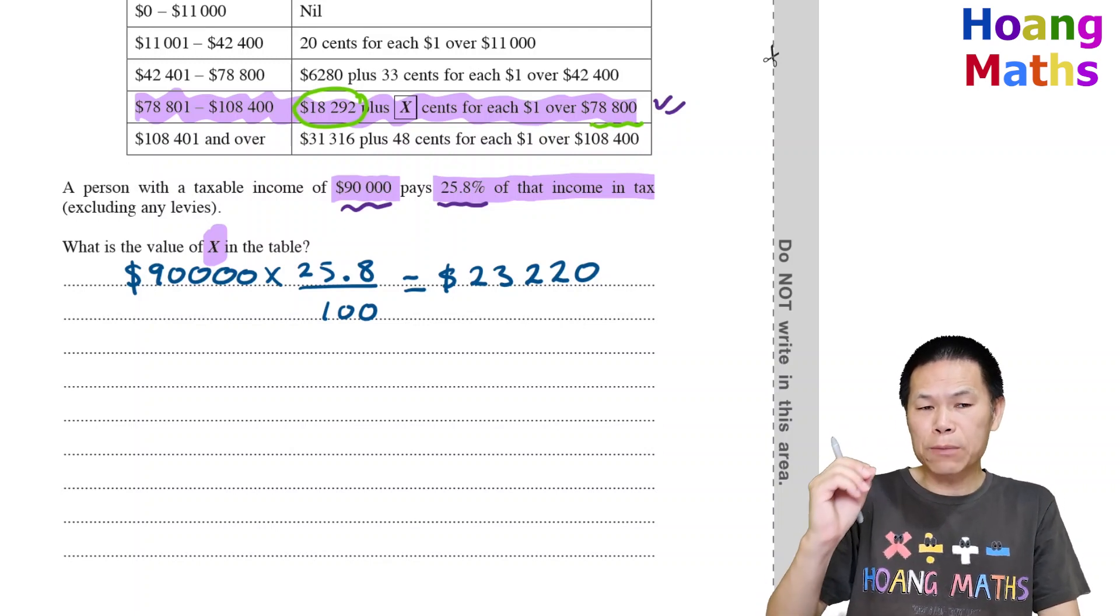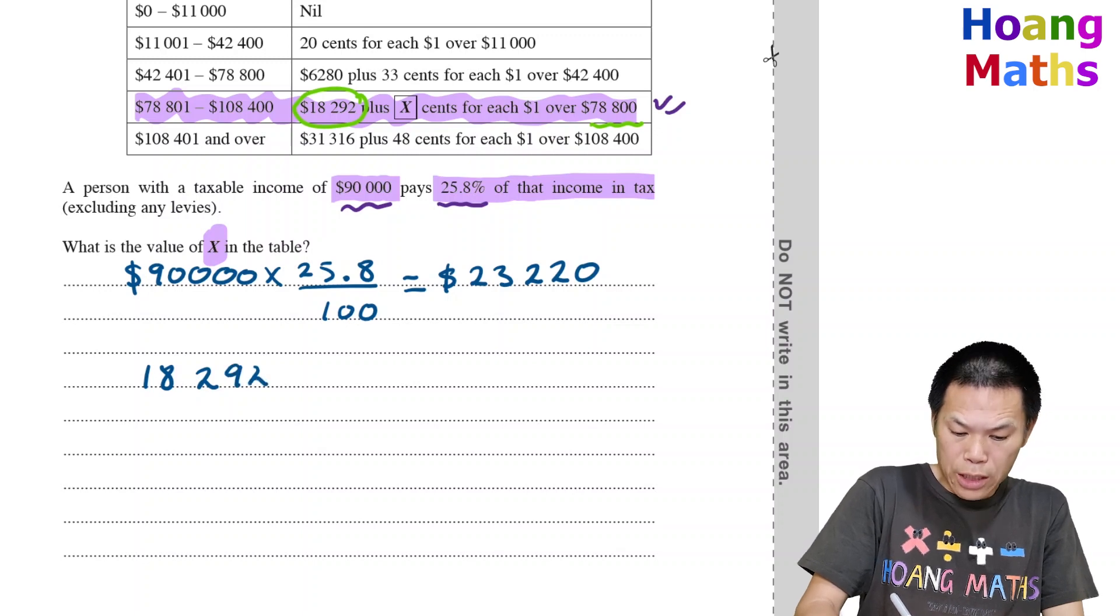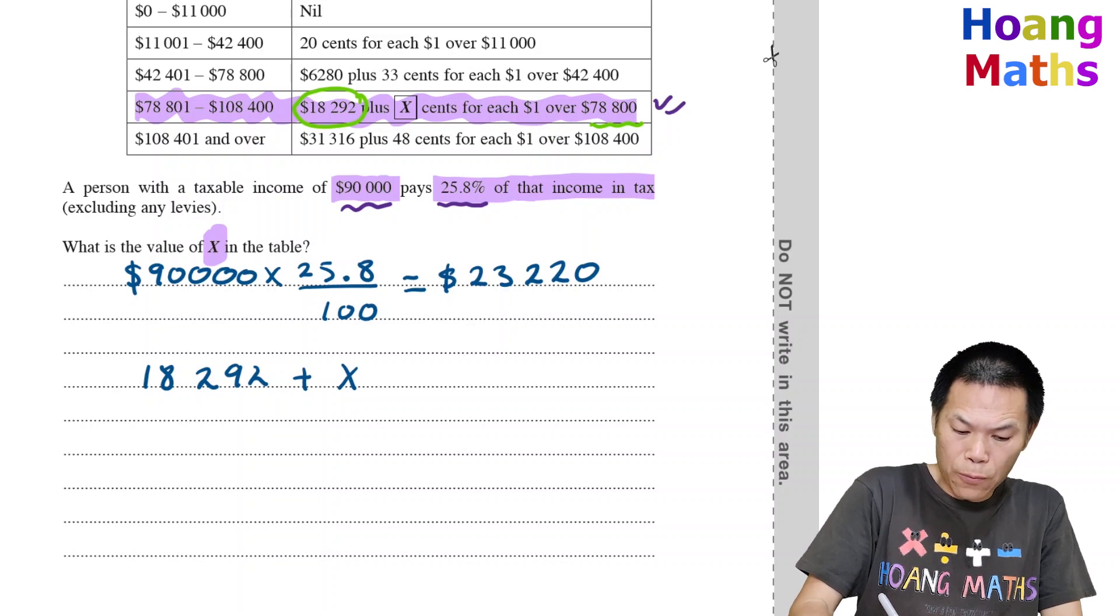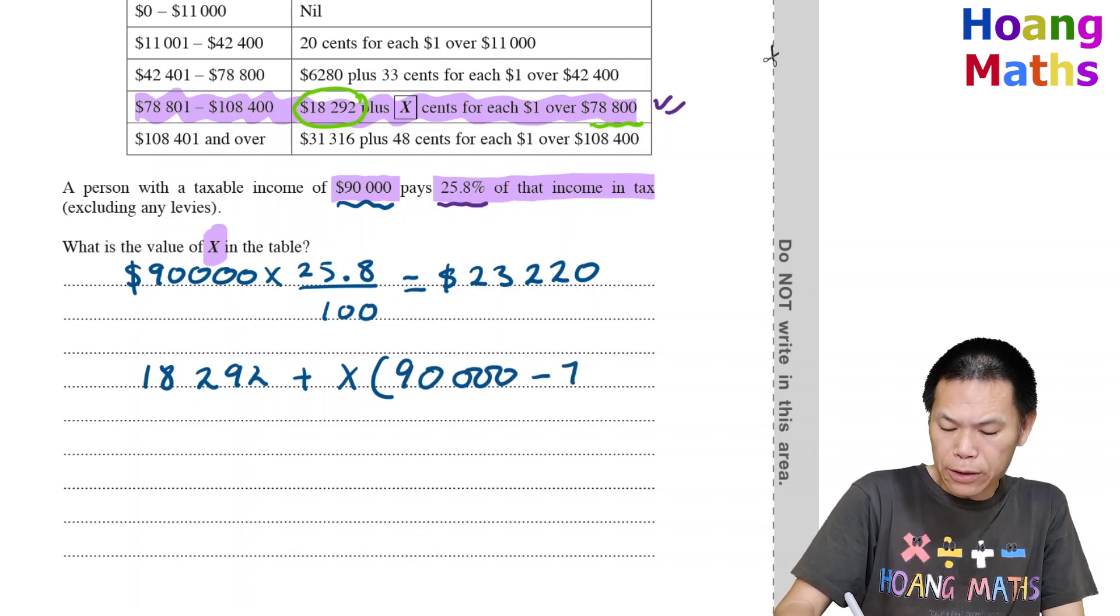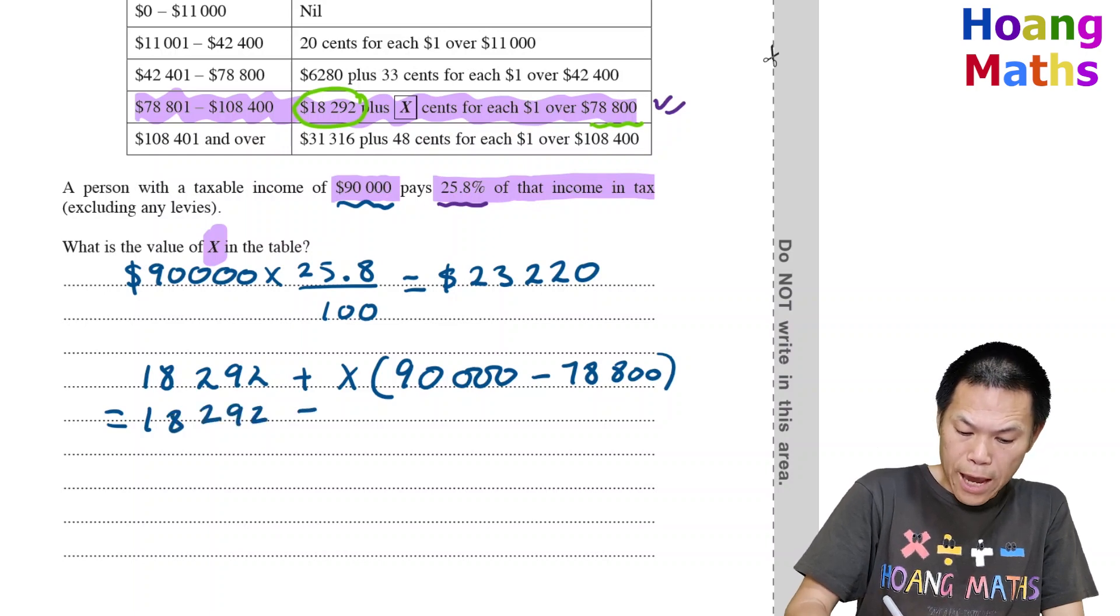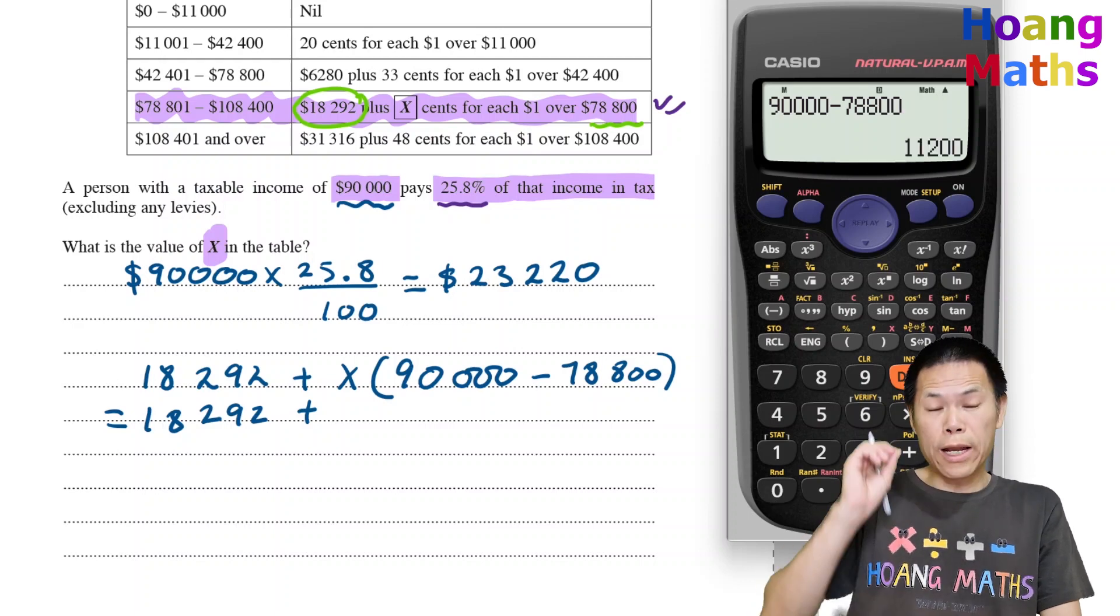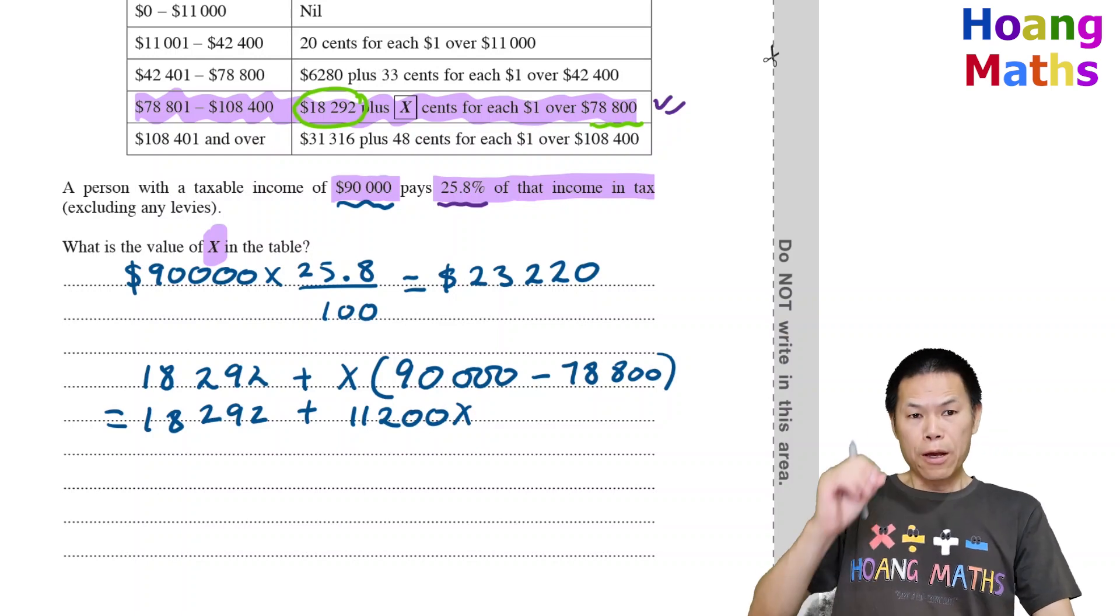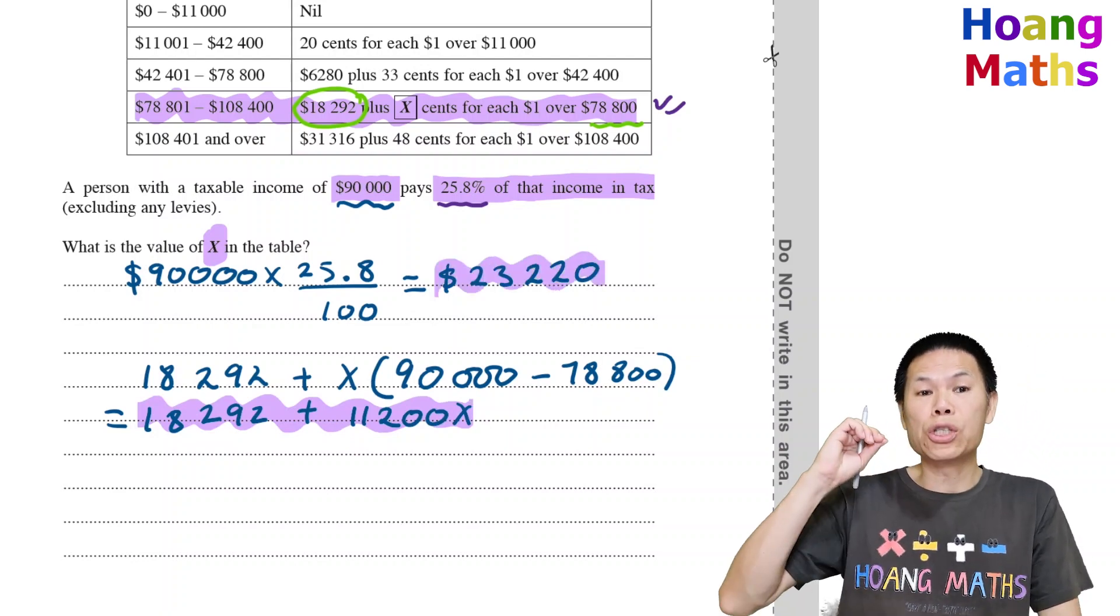Let me work out the tax using the table. Tax equals $18,292 plus X cents for every dollar over $78,800. The taxable income is $90,000 minus $78,800, which is $11,200. So that's $11,200 X. This is the amount of tax, exactly the same as before. Let me equate this and solve for X.